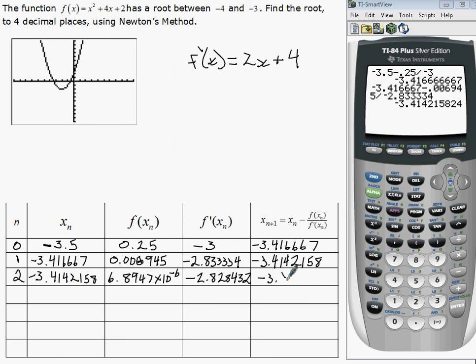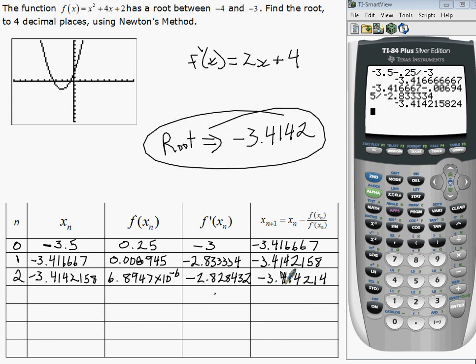So we've found the root to four decimal places, 4, 1, 4, 2. So the root is negative 3.4142 to four decimal places. We actually know the 1 is also right, so we can say five decimal places. But this is what this tells us.